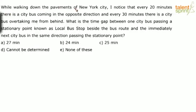While walking down the pavements of New York City, I noticed that every 20 minutes there is a city bus coming in the opposite direction and every 30 minutes there is a city bus overtaking me from behind. What is the time gap between one city bus passing a stationary point — a local bus stop beside the bus route — and the immediately next city bus in the same direction passing that stationary point?